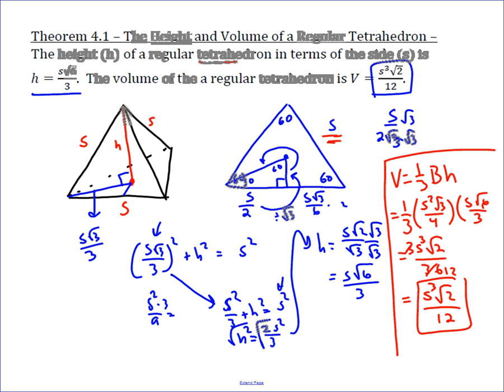which is a very nice formula and very worthwhile and useful and worth knowing. We're also going to look at, later in another video, the inscribed sphere and a circumscribed sphere, and in both of those, this height is going to be very important. So knowing that side root 6 over 3 is the height is a very important formula.